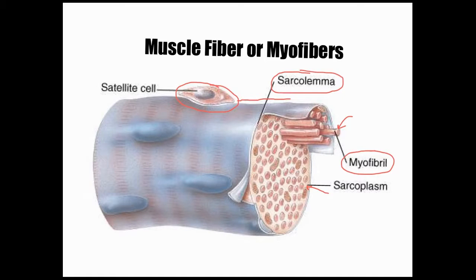Muscle fibers also contain satellite cells. When your muscles get damaged — if you have trauma or tear a muscle — it is these satellite cells that repair that damage with scar tissue. They're also going to construct new myofibrils, new thin and thick filaments, which allow for muscle contraction.